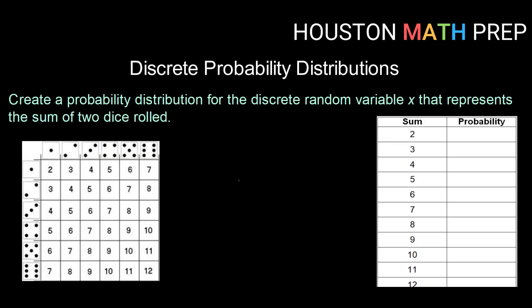Let's take a look at creating another. So we're going to create a probability distribution for the discrete random variable x that represents the sum of two dice that have been rolled.